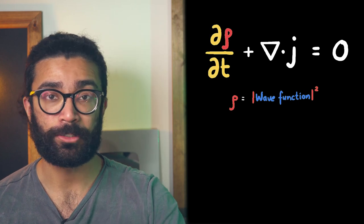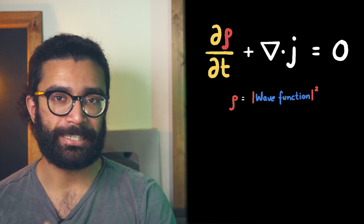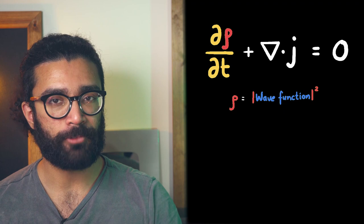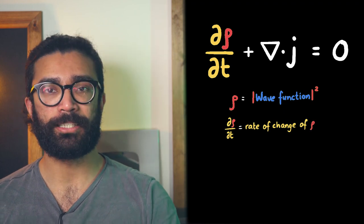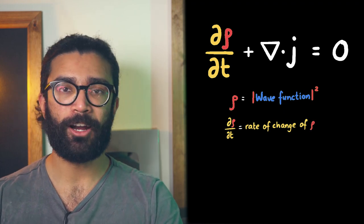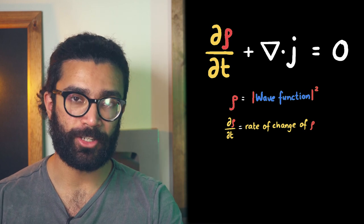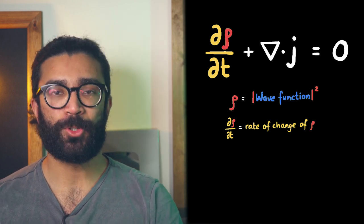Now let's talk about this whole term. Partial d rho by dt. This represents the rate of change of our probability density, or how quickly our probability density changes over time. That'll become important in a second.